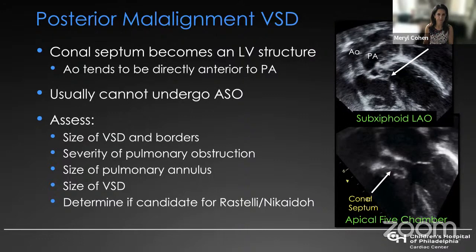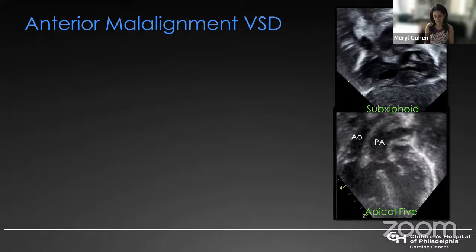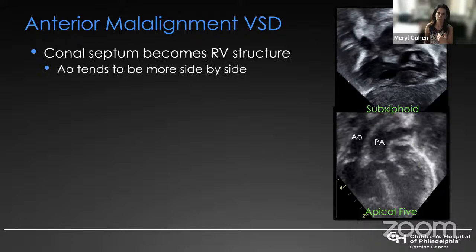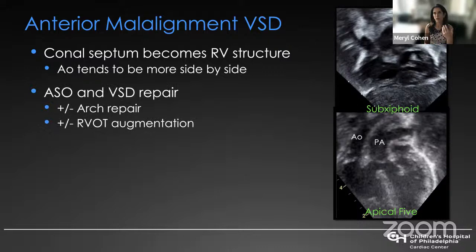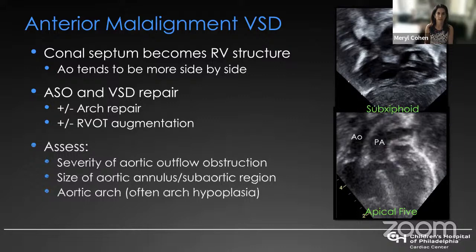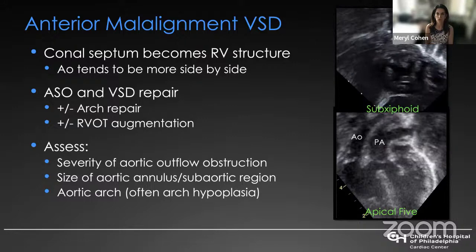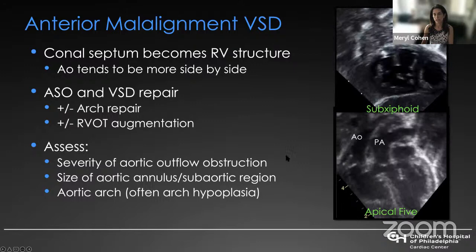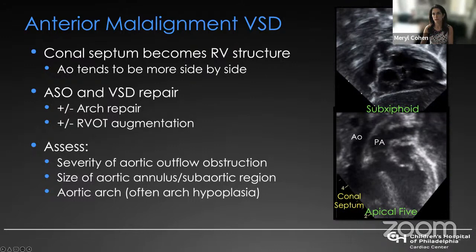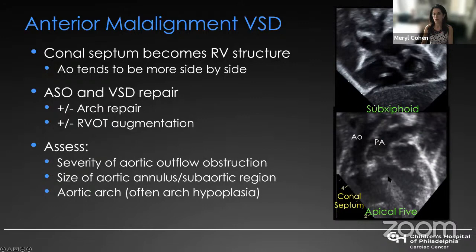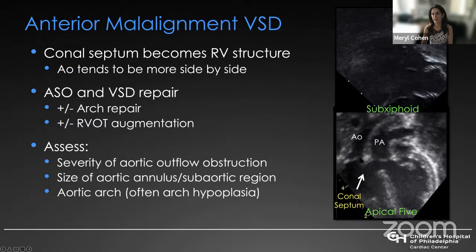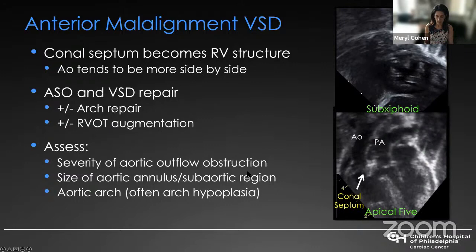Anterior malalignment VSD is when the conal septum becomes an RV structure — the equivalent of Tetralogy of Fallot in normally related great arteries. The aorta tends to be more side-by-side with the pulmonary artery. These patients undergo that very complex repair: arterial switch with VSD closure, and they may or may not need arch repair or right ventricular outflow tract augmentation. It's important to assess the size of the aortic outflow and always look at the arch in these patients because it's often obstructed.